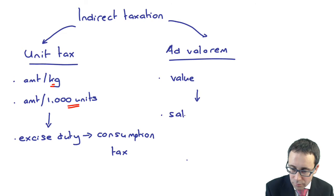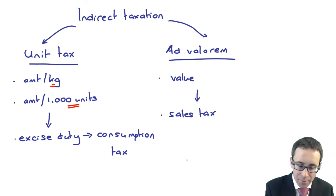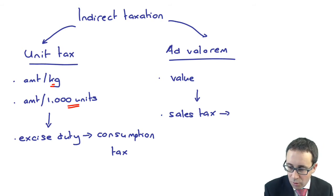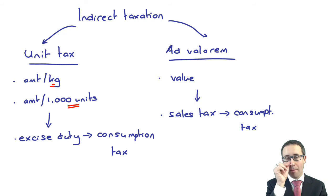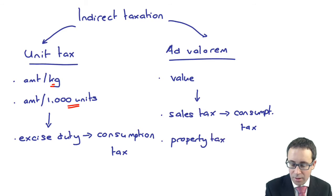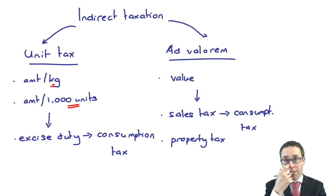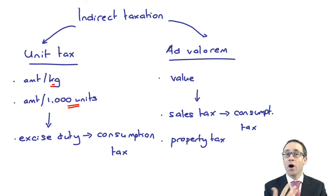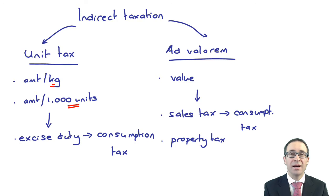Sales tax is also a consumption tax, because you are consuming or purchasing the goods. Other ad valorem taxes include property tax — where the government charges a tax based on the value of your property, whether that is land or buildings. In the UK, we tend not to have a property tax on the owner. There is a tax on the people who are using the property, referred to as council tax, which falls upon the person using the premises.